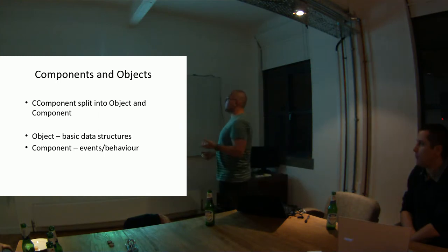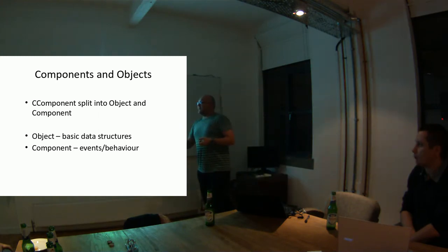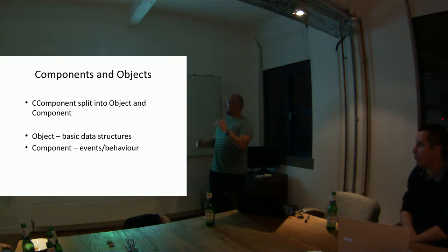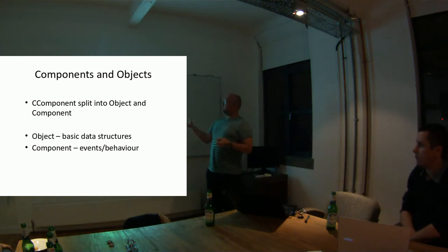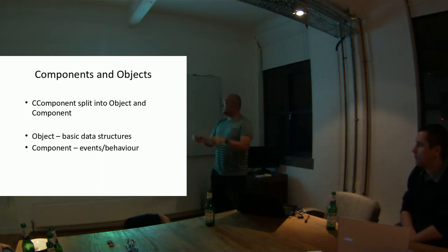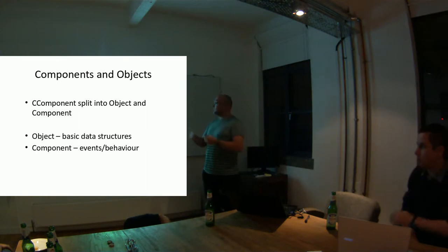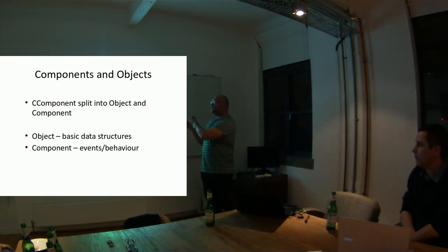Secondly, components and objects. CComponent — something I'm sure you've used if you've been coding — has now been split into Object and Component. This is just to simplify things. If you're aiming for a simpler data structure, then you go for Object. If not, you go for Component itself. The Component will give you fancier stuff: it will give you events, behaviours, et cetera. But that gives you a choice now.